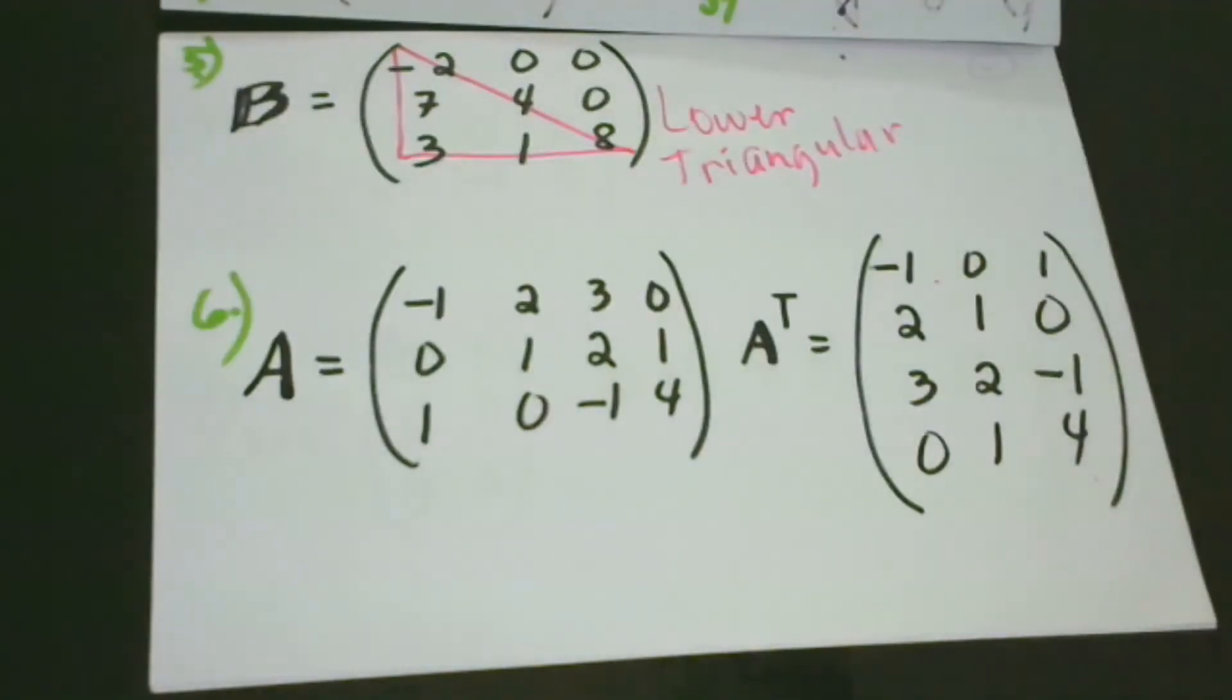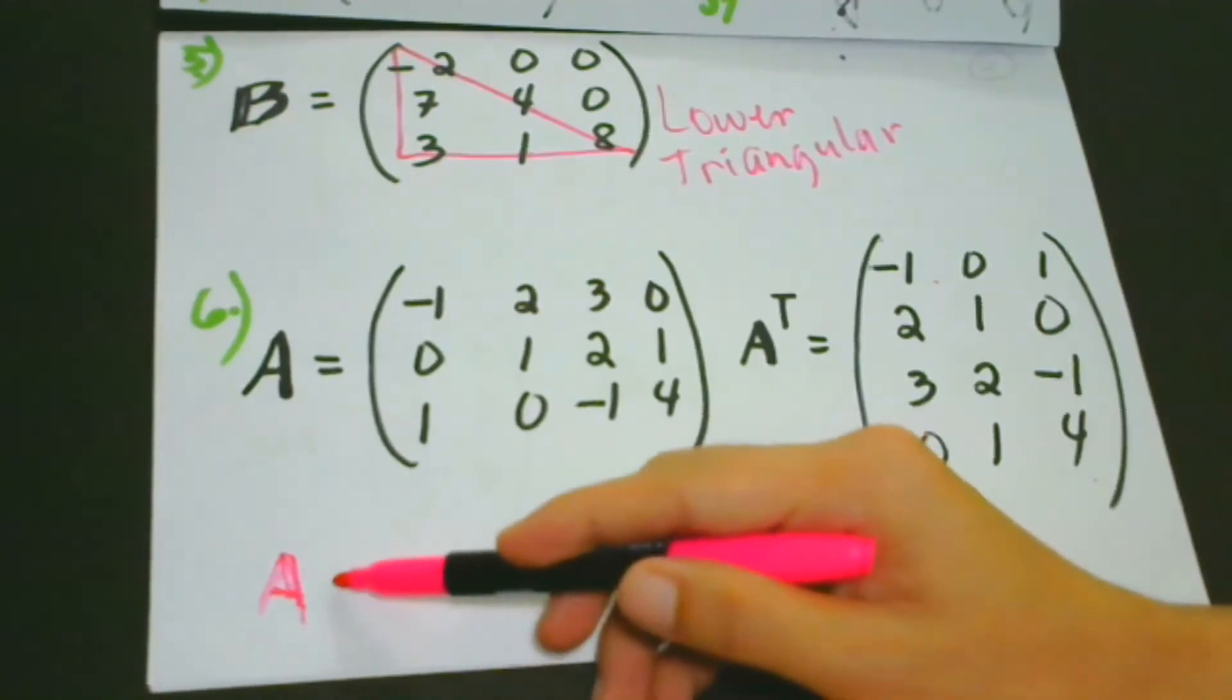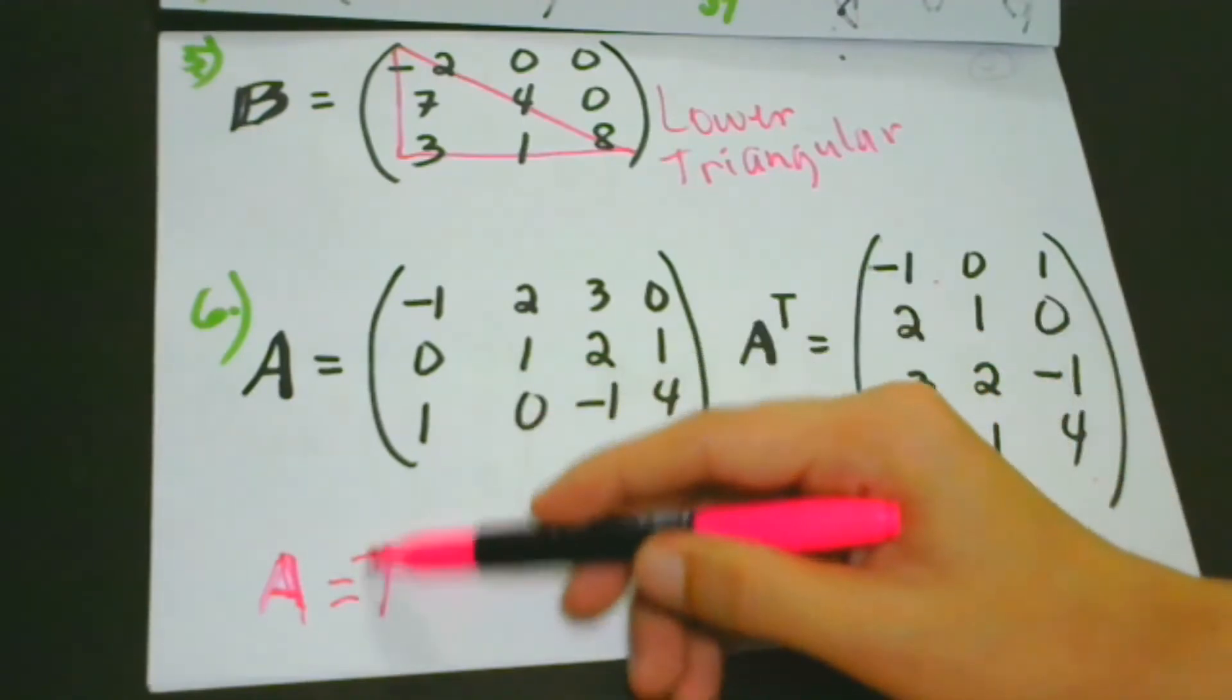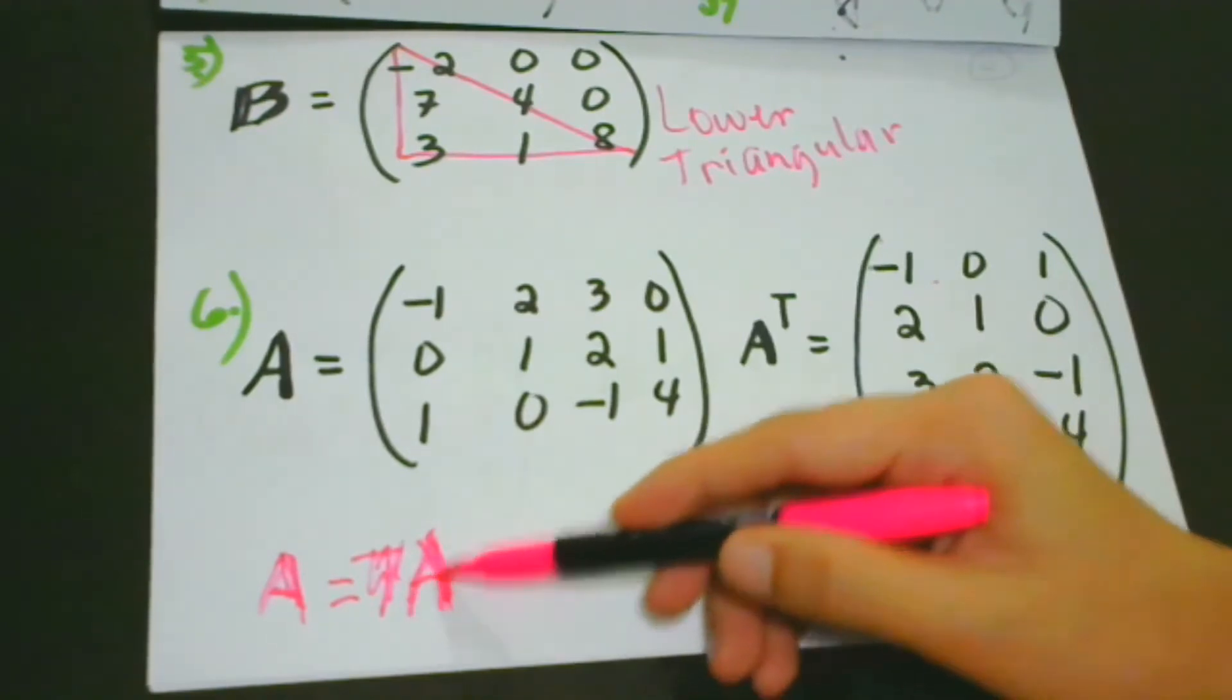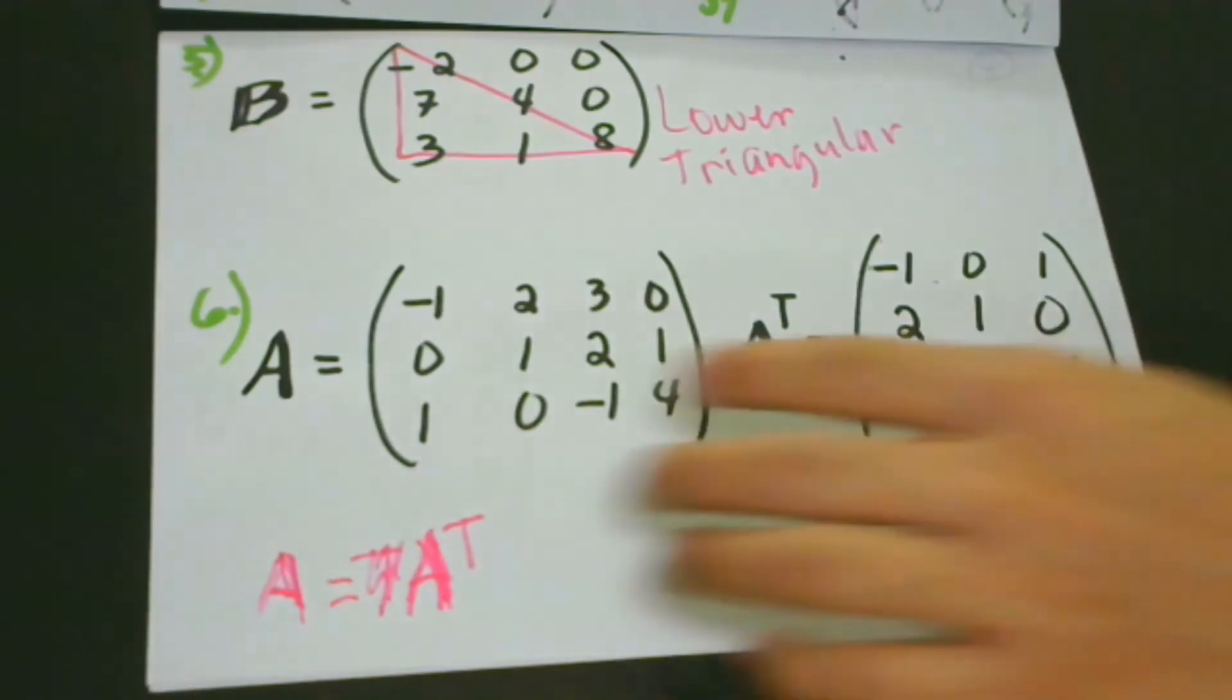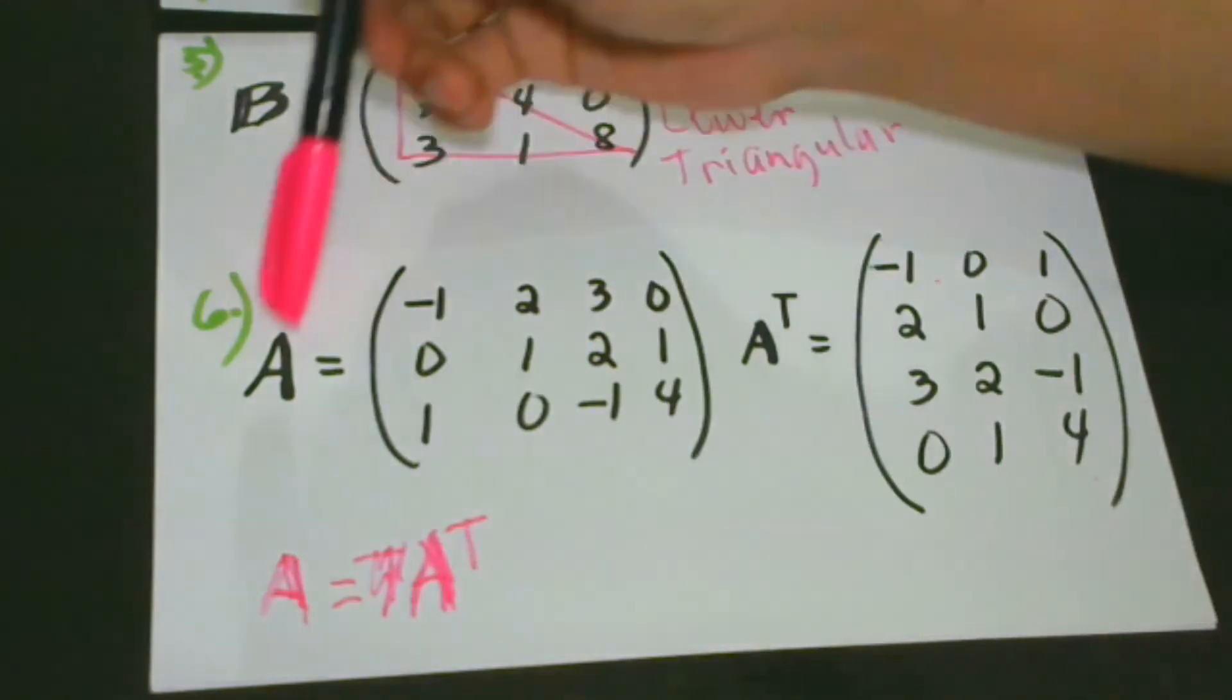Let's go to the symmetric matrix. What is this? This is any matrix that is equal to its own transpose. So we could say that A is equal to its own transpose. As you can see here, in this matrix A, we have 1, 2, 3, three rows and four columns.